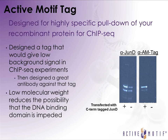At Active Motif, we recently developed a new tag with ChIP-seq in mind, designed for highly specific pulldown of your tagged protein. Unlike a typical flag or HA tag, we designed this tag to have very low background in the human genome, and then designed a very high specificity antibody to it. This tag is very low molecular weight and has no folding, which prevents any impediment of the DNA binding that you would see from larger tags like GFP or flag.